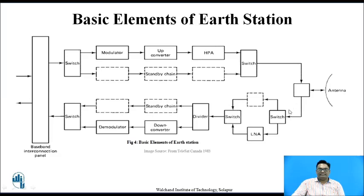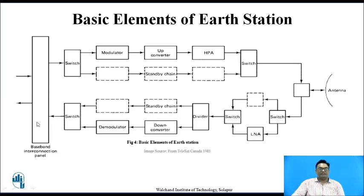The received signal is then given to the demodulator where it is demodulated, and again given to the switch, which then provides the main information signal to the baseband interconnection panel. The basic elements of the Earth station include both the transmitting part and the receiving part. These two sections can be differentiated by the HPA and the low noise amplifier. A divider, a switch, a modulator are used during transmission, while a demodulator is used at the receiving side.